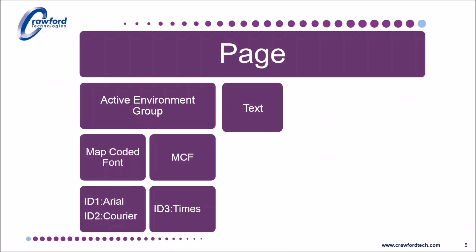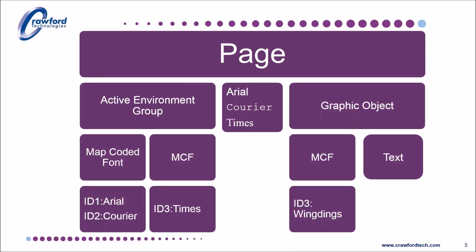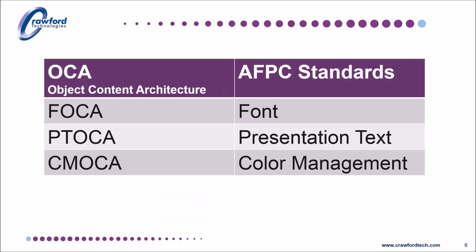Here we have a page with an active environment group that defines three coded fonts within two map coded font structures. As expected, the Arial, Courier and Times New Roman text is displayed elsewhere on the page. There is a graphic object that defines font ID 3 to be Wingdings, so the text within this graphic object is displayed as Arial, Courier and Wingdings. We see this technique on a daily basis on the internet in cascading style sheets, first invented in 1994.